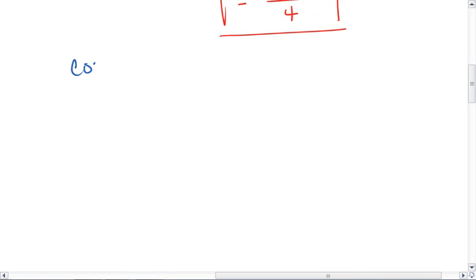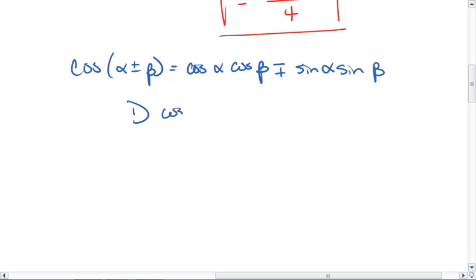We know that cosine of alpha plus or minus beta equals cosine alpha times cosine beta minus or plus sine alpha sine beta. Meaning, if we have cosine of one angle plus another, this equals cosine of the first angle times cosine of the second angle minus sine of the first angle, sine of the second angle.